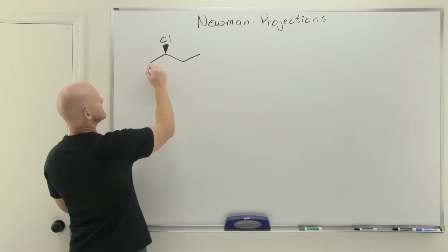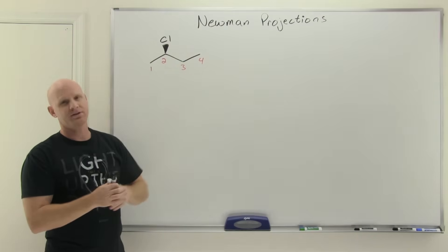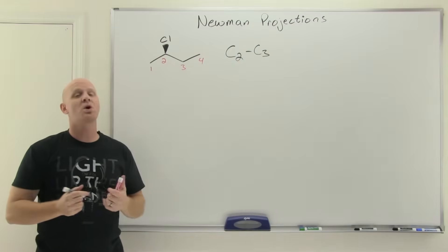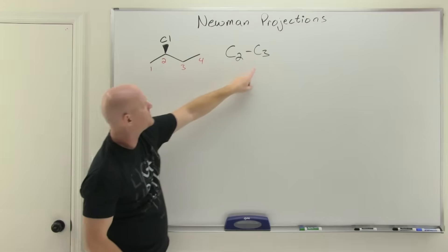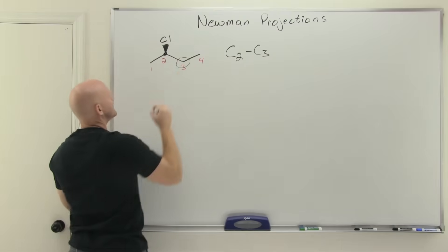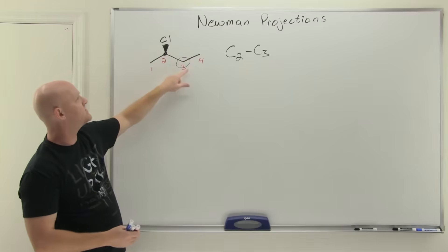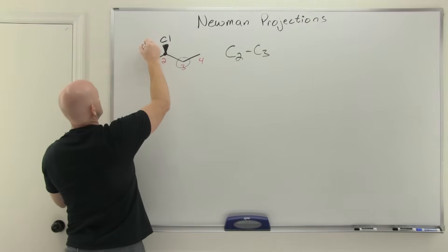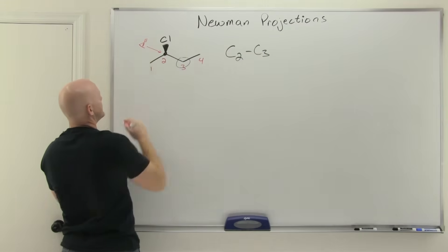If you were numbering this molecule to name it, you'd make sure chlorine ended up on the lowest possible number, so we'd number it left to right. In our question, I'm asking you to look down the C2-C3 bond axis and draw the lowest energy conformation — so you want C2 to be the front carbon and C3 to be the back carbon. We represent that front carbon with a dot, and then a circle representing the back carbon.